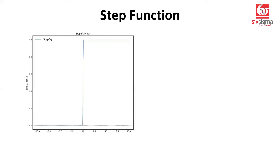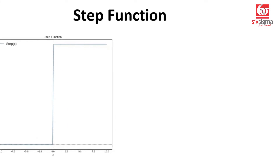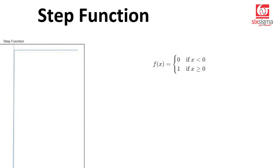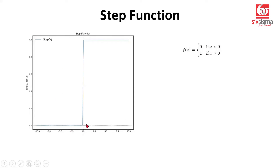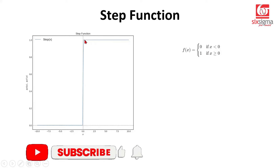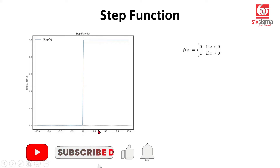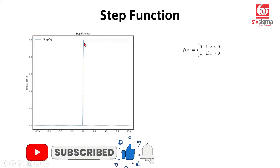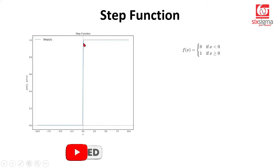The first activation function, which happens to be the most classic activation function — it simply used to be called a decision function in the earlier times — is the step function. It is zero for values of x less than zero, and it is one for all values of x greater than or equal to zero. So basically, in between there is a jump; it is not a continuous function. It attains only two values: either zero or one.